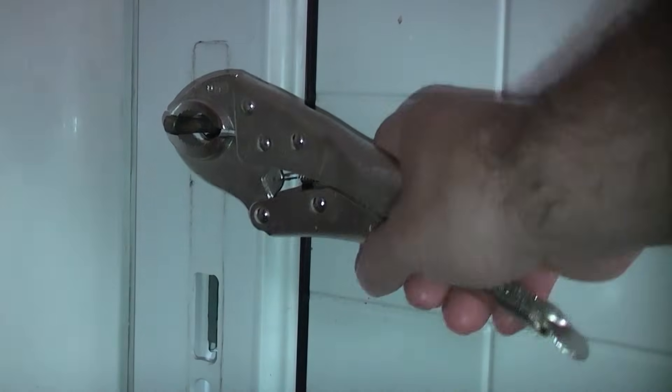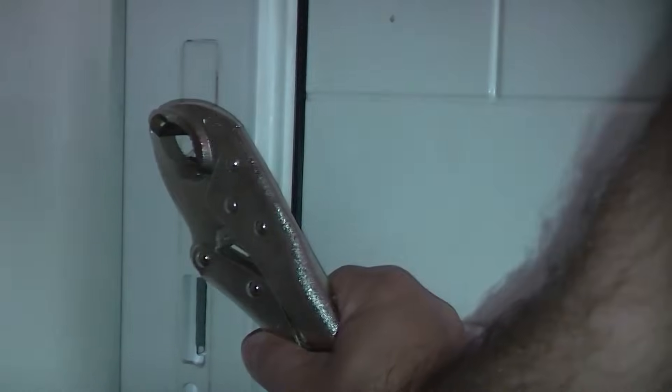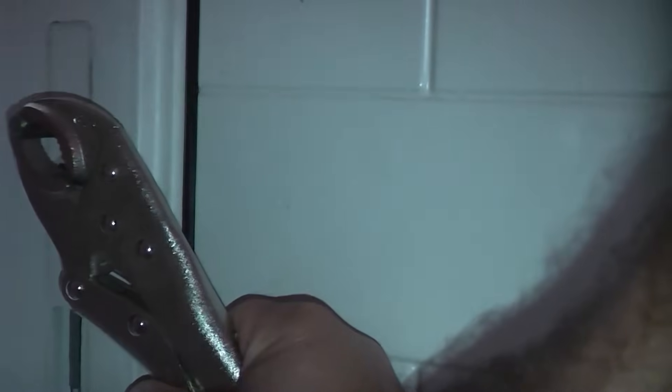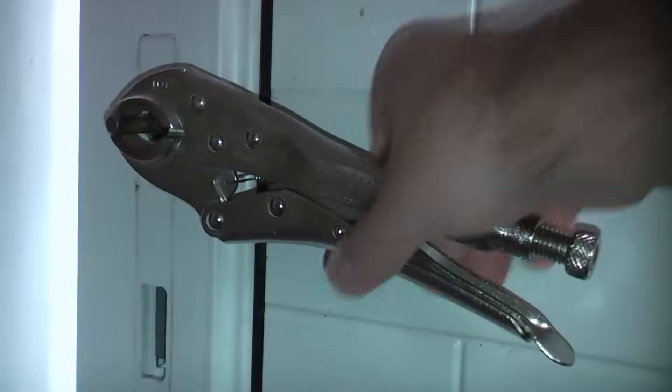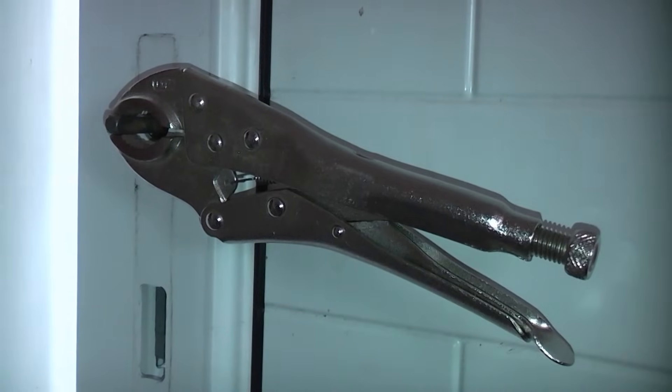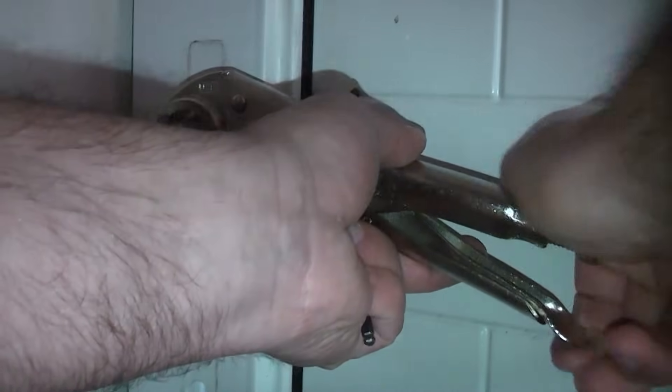I've just put an allen key in there just to show you what you would need to do if the door was in the locked position. You could push the allen key in and turn the actual cam around, which would unlock the door. Once you then push down on the mull grips, you can then open the door.